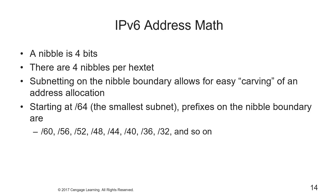A byte is eight bits and a nibble — a smaller byte — is four bits. There are four nibbles in a hex tet. Because IPv6 addresses are expressed using hex characters and succeeding sets of 16 bits are separated with a colon, we have those four nibbles per hex tet. Sometimes we'll call it a quibble, which is short for a quad nibble.